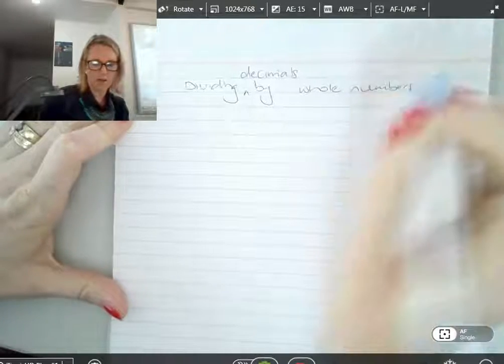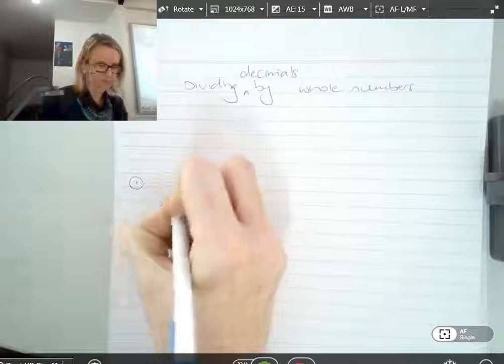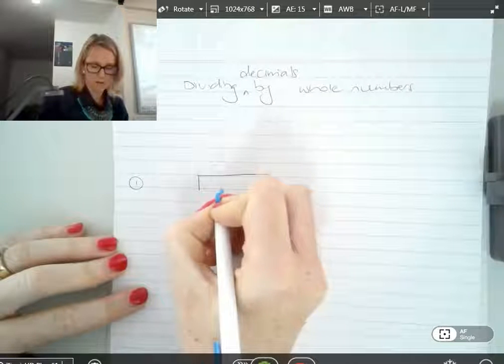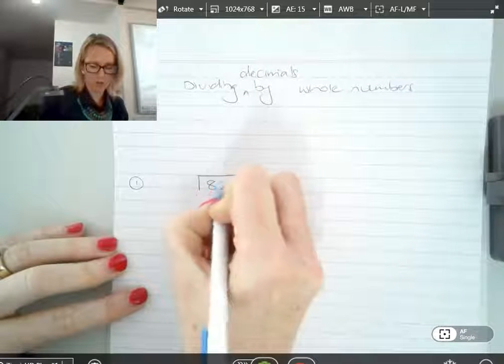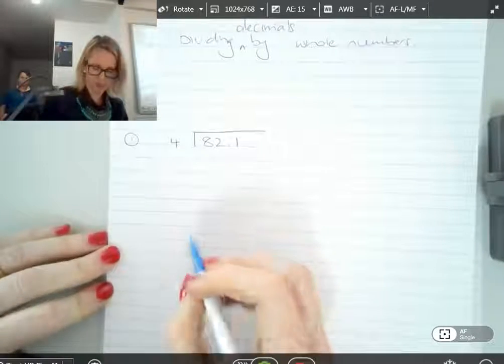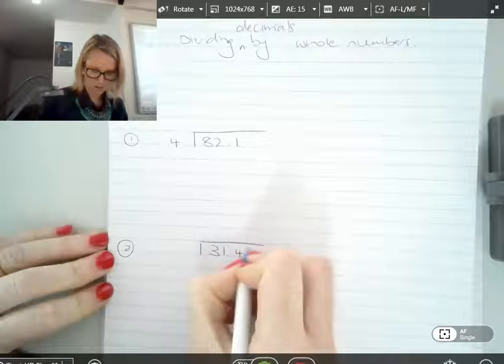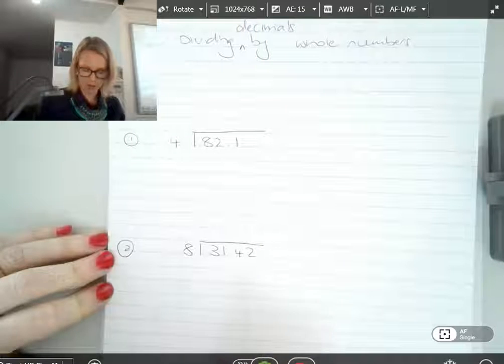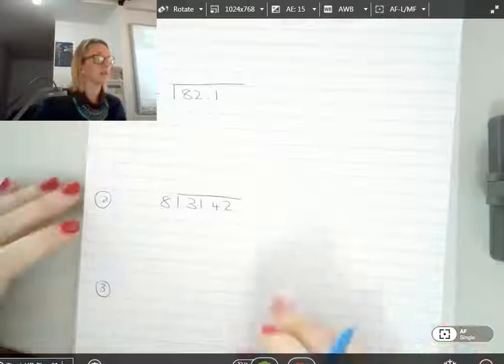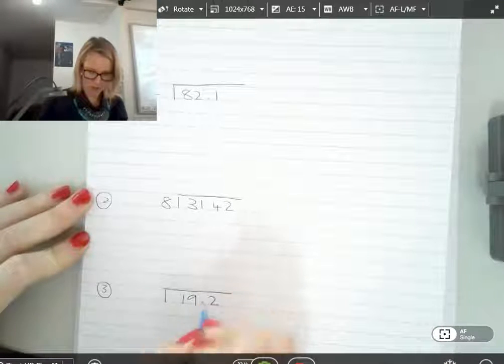And can I have someone read one of the questions for me? Yep, Orlando. Okay, so it would be 82.1 divided by 4. Yep. The next one, please, Will. 131.42 divided by 8. Yep, and the third one we're going to do today is... Yeah, Tom? 19.2 divided by 3.